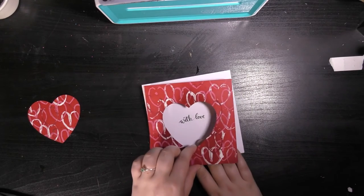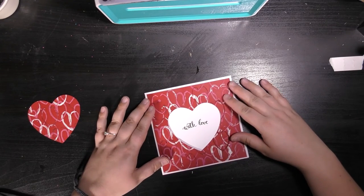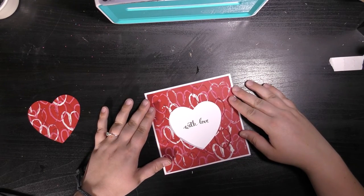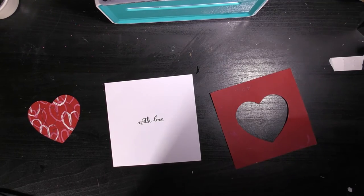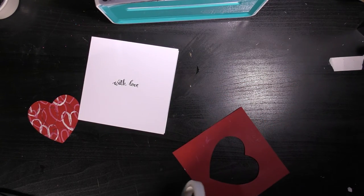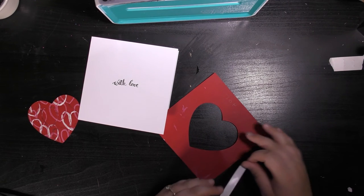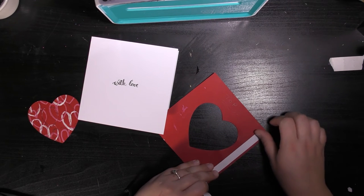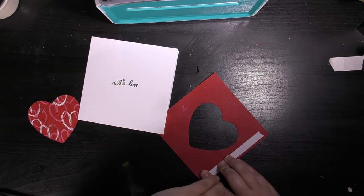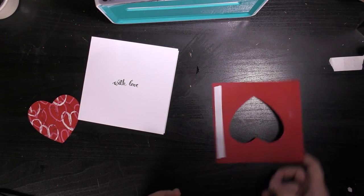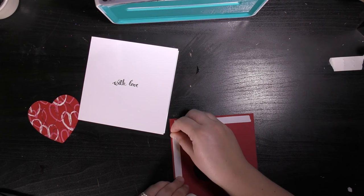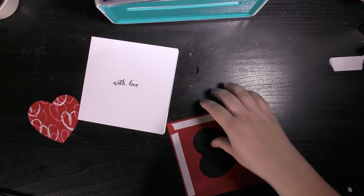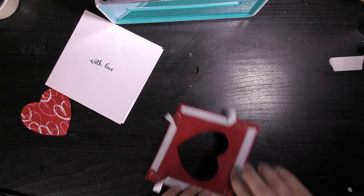Now the heart shape's been cut out, you can put the whole card together and you can see the sentiment is going to come through the middle of that heart shape in the red paper. I'm going to use double-sided tape to stick my paper down, but you can use whatever you wish. I'm going to put the tape on all four sides of my paper just so that I don't get any lifting.